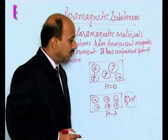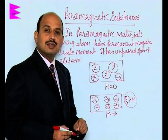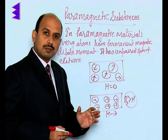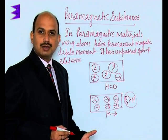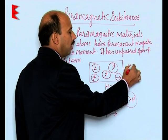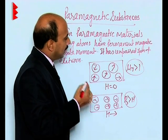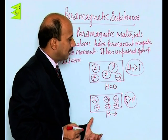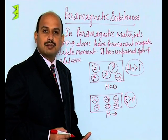In this case, the intensity of magnetization has a low value, but it is positive. Because of that, chi_m is also positive, and as a result mu_r is greater than 1 for paramagnetic substances. This is about paramagnetic substances and their behavior in the external magnetic field.